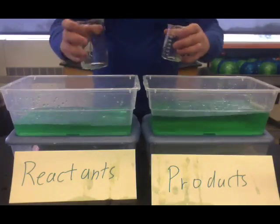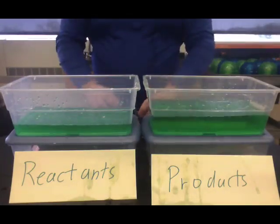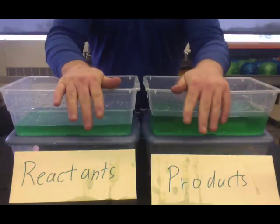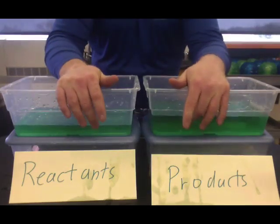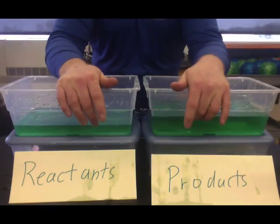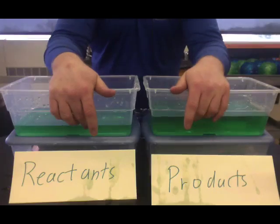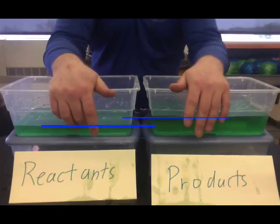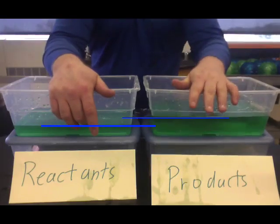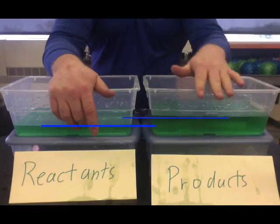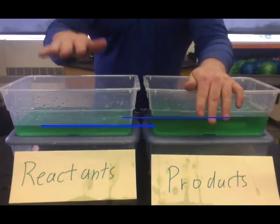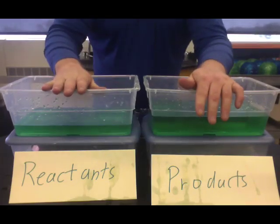Now, in this case, if we look, we had equilibrium. So the process is at equilibrium. But if we look, on the product side, we have much more water than we do on the reactant side. So in this case, because we end up with more product, we would call this a product favored equilibrium. We have less reactant, so it is not reactant favored.